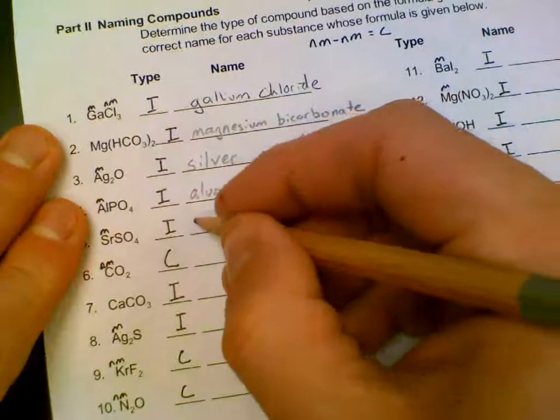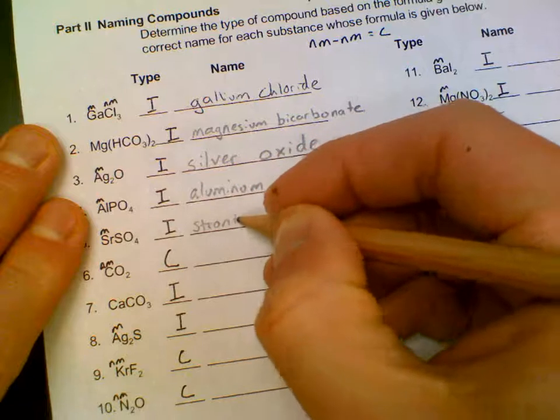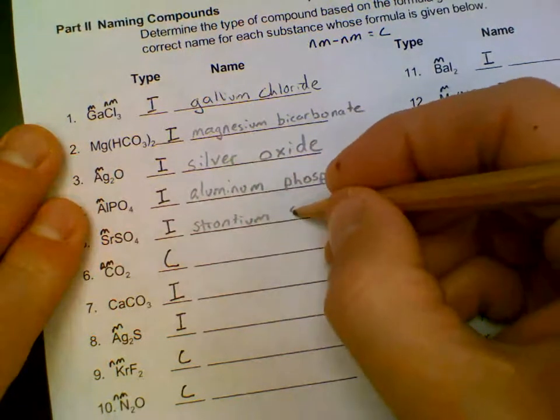Sr is a metal, gets its full name, strontium. SO4 is sulfate.